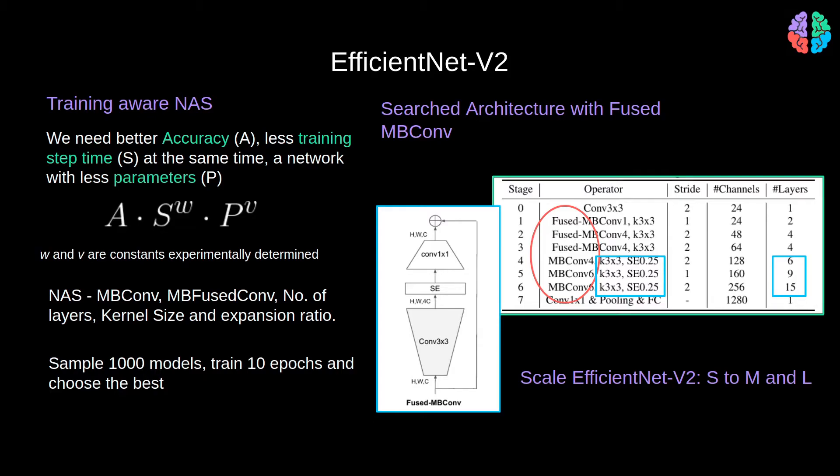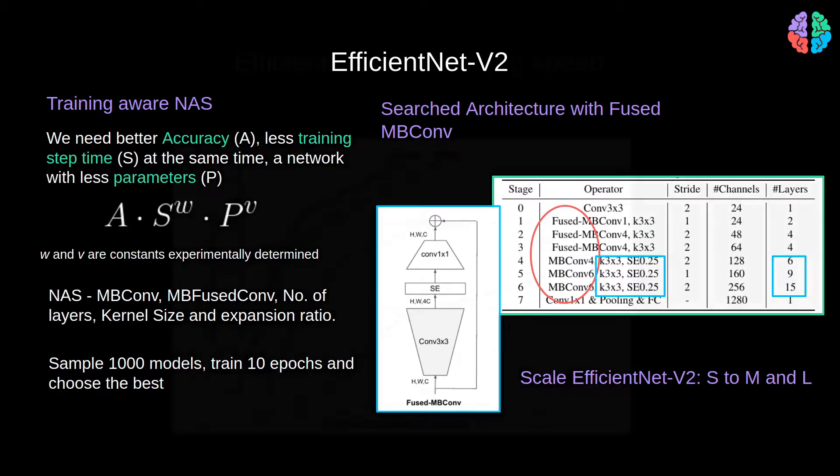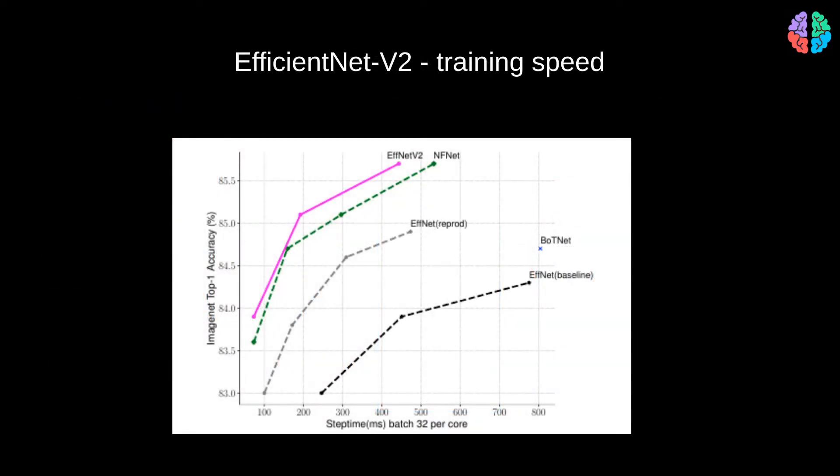We do all this to improve the training speed. So this graph shows a direct comparison of the training times of different models against the EfficientNet version 2. We can straight away notice that the time it takes for the proposed version 2 model is significantly less than the time taken by the version 1 model to achieve the same accuracy.